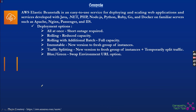AWS Elastic Beanstalk is a PaaS offering that provides a platform for various applications including .NET, Java, PHP, Ruby, and Python. You focus on the application side while AWS handles all the infrastructure and platform concerns. Deployment options include: all-at-once (short outage), rolling (reduced instance capacity), rolling with additional batch (full capacity), immutable, blue/green (zero downtime), and traffic splitting which is a canary-style deployment where a percentage of traffic goes to new instances before full cutover.